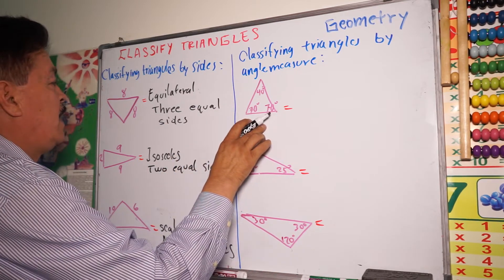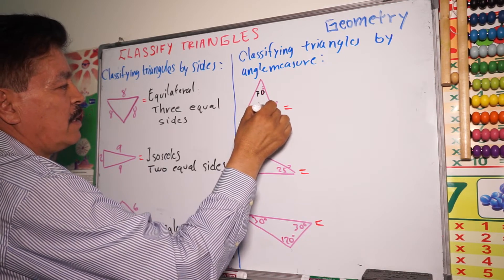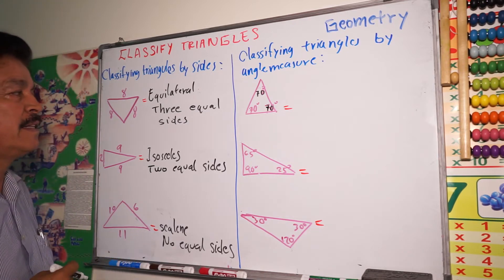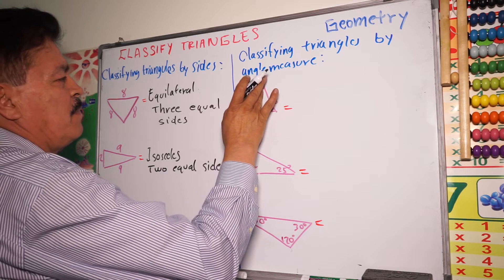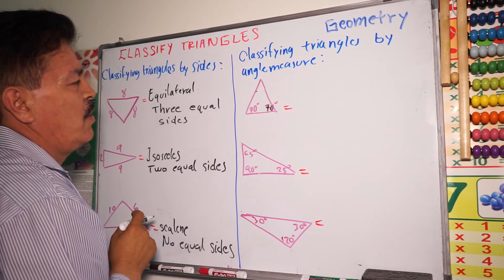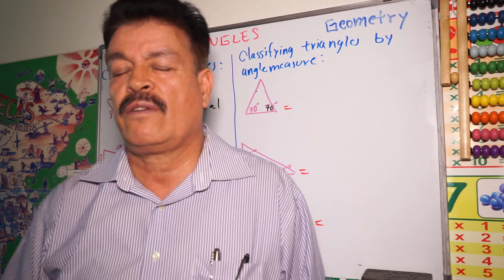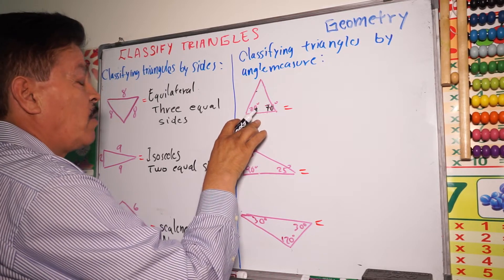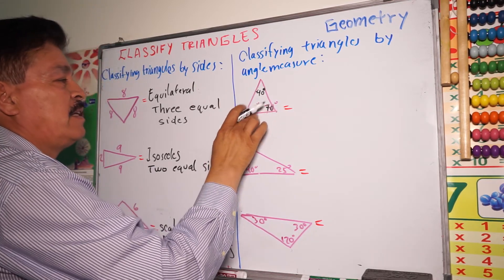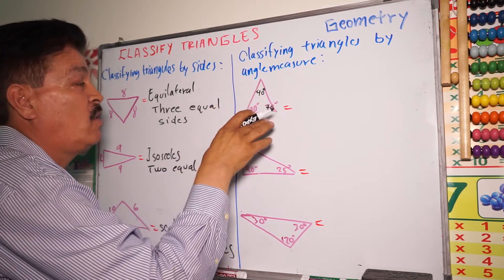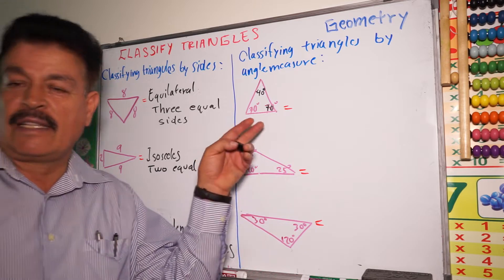The first type by angle measure: this triangle has all angles the same — this triangle has three acute angles. For example, if you have 70, 70, and 40 degrees — inside the triangle the angles must equal 180 degrees. So 40 degrees plus 70 degrees plus 70 degrees equals 180. This kind of triangle is called acute. It has three acute angles, meaning each angle is less than 90 degrees.